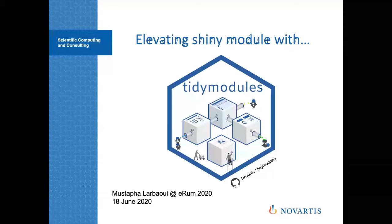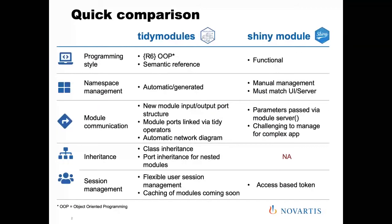If you don't know what a Shiny module is, it can be considered as a reusable building block for your Shiny application. It's made up of two functions: a UI function and a server function. What tidy module is, it's a kind of framework structure that sits on top of Shiny modules — it does Shiny modules under the hood — but it gives structure and provides a convention to do more things with Shiny modules. In the next slide, I'm comparing tidy module and Shiny module side by side. The first thing to notice about tidy module is that we use R6 — object-oriented programming using R6 — and we use semantic references, as opposed to Shiny module where it's two functions and functional programming.